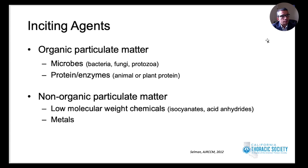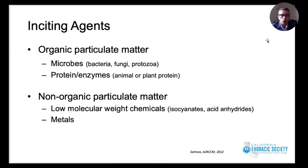The agents that lead to hypersensitivity pneumonitis are broadly categorized into organic and non-organic particulate matters. Organic particulate matters can be microbes — bacteria, fungi, protozoa — or animal and plant proteins. Non-organic matters include metals, low molecular weight compounds like isocyanates and acid anhydrides. It is likely that exposures leading to chronic HP involve more than one inciting agent at any point in time.